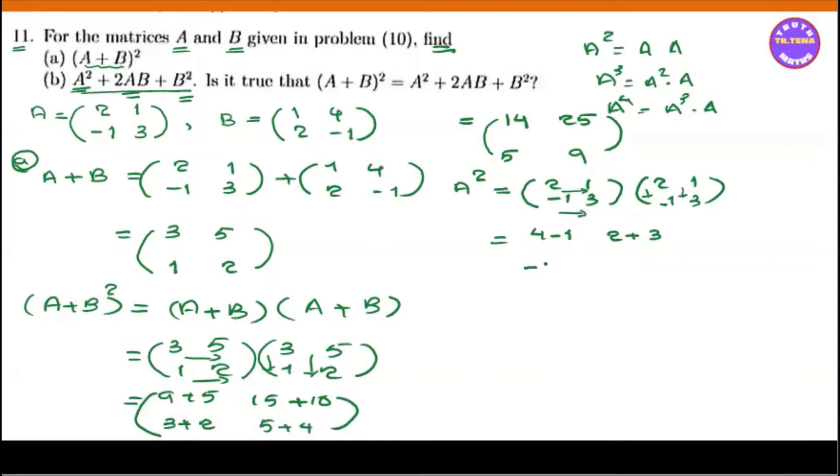2 minus 1 is minus 2, 3 minus 1 is minus 3, 2 plus 1 is minus 1, 1, 3, 2 plus 3 is minus 5, minus 2 minus 3 is minus 5, minus 1 plus 9 is 8. B squared is minus 1.